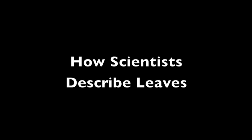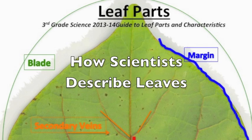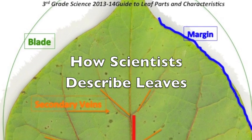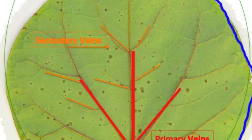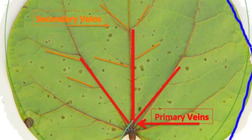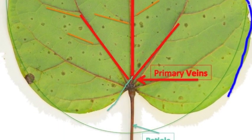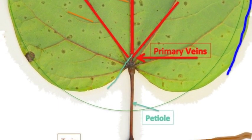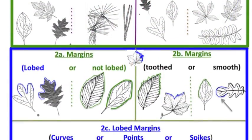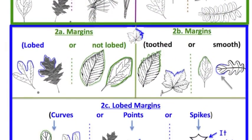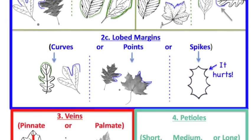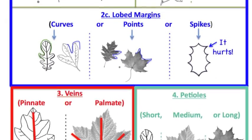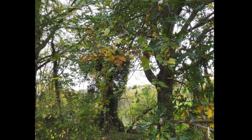In our last class, we learned the names of the parts of a leaf. In this class, we will learn how scientists describe each of the parts. The more carefully and accurately we can describe each part, the easier it will be to identify the trees.